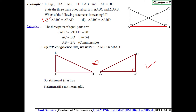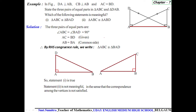The second statement says triangle ABC is congruent to triangle ABD, but this is not meaningful, in the sense that the correspondence among the vertices is not satisfied. Therefore, this statement is not meaningful.